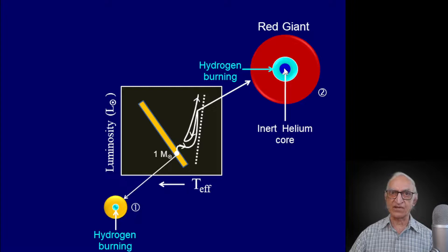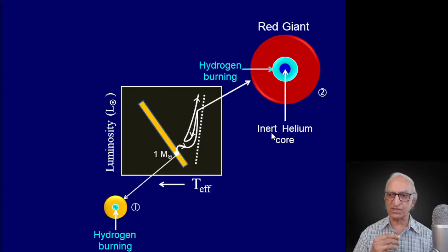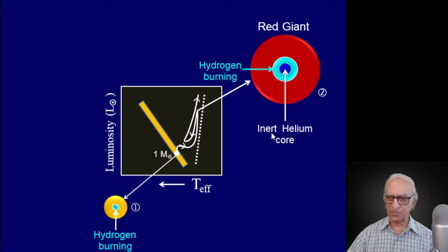As I explained in great detail in the previous lecture, this helium core will be inert — meaning helium will not combine with other helium nuclei to form heavier elements, for example carbon, because the temperature isn't high enough. You need a temperature of 100 million degrees to fuse two helium nuclei together, and we don't have that temperature.